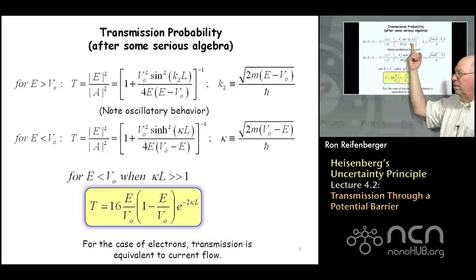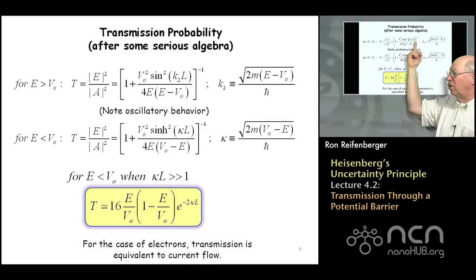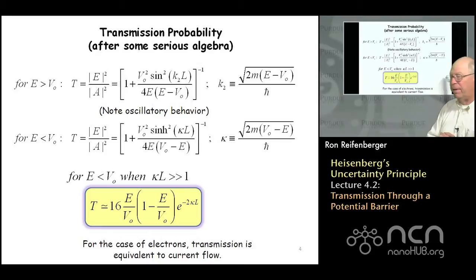This is interesting because the sine squared term will oscillate as k₂L varies. Since k₂ depends on the energy, as we increase the energy this argument will pass through integer multiples of 2π, causing an oscillation in the transmission probability as the particle passes over the barrier.